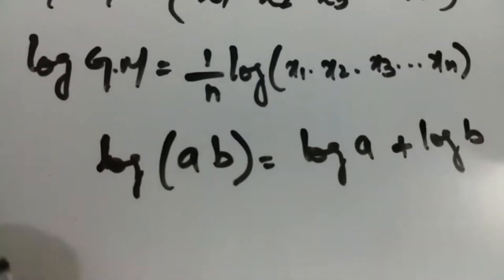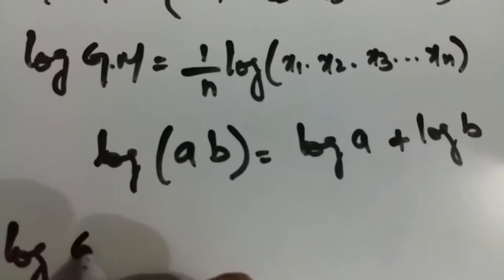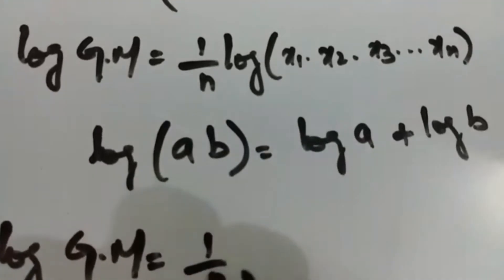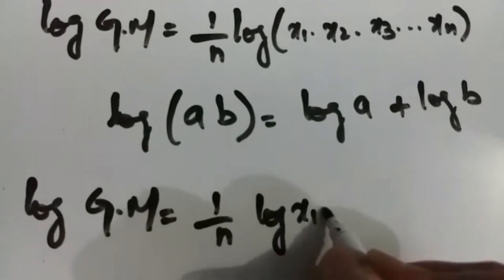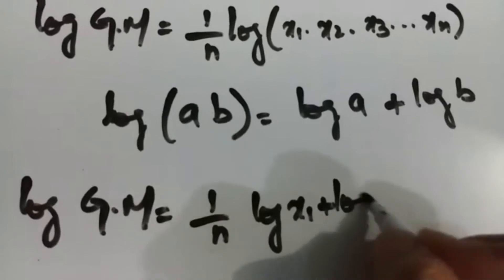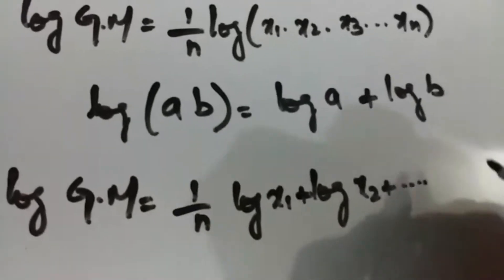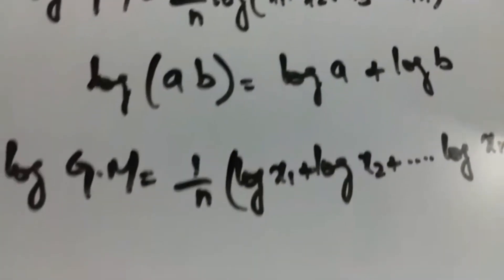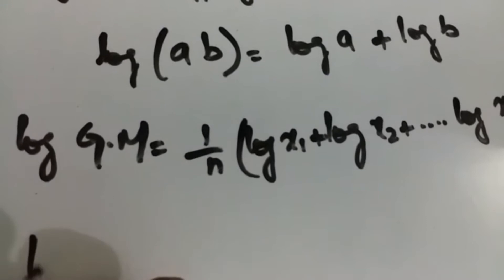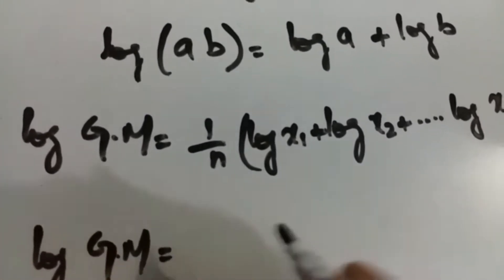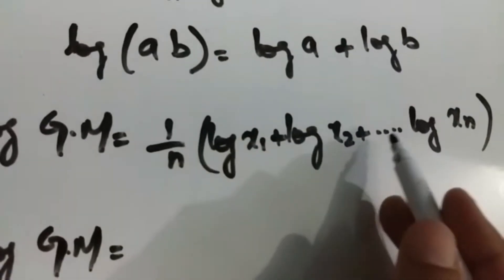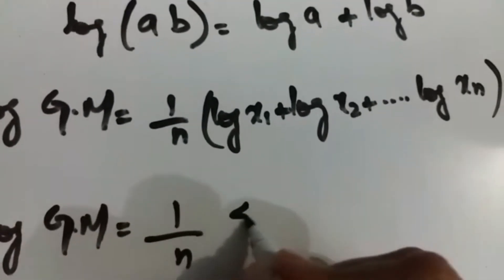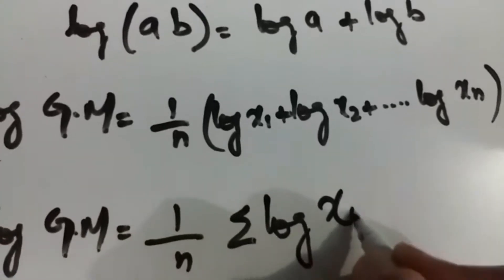Log of geometric mean equals 1 over n times the sum of log x₁ plus log x₂ plus log x₃ up to log xₙ. Since all log terms are added together, we apply the summation sign, giving log of geometric mean equals 1 over n times summation of log xᵢ.